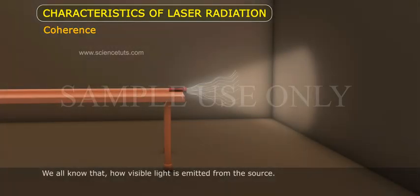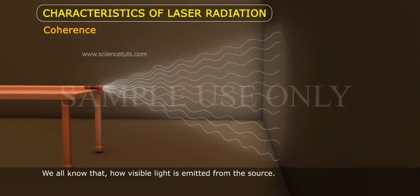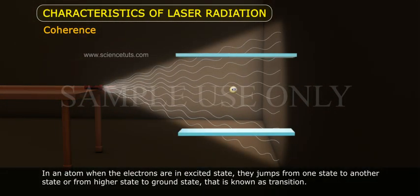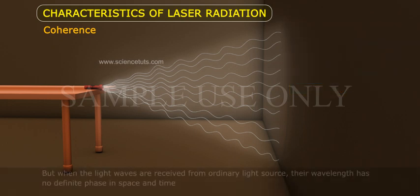Coherence. We all know how visible light is emitted from the source. In an atom, when electrons are in an excited state, they jump from one state to another state, or from a higher state to ground state. That is known as transition. In ordinary light sources, the electronic transition takes place randomly.